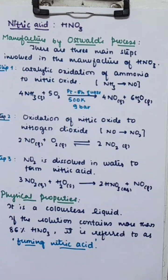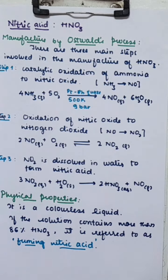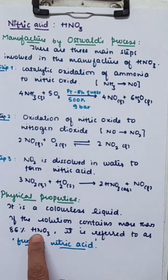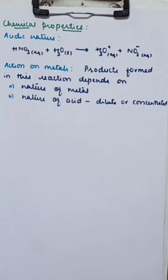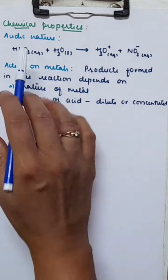Some physical properties of nitric acid: it is a colorless liquid. Laboratory grade nitric acid contains around 68% HNO3 by mass. If the solution contains more than 86% HNO3, it is known as fuming nitric acid.